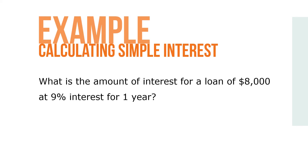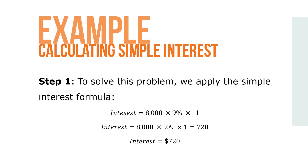Here's an example. What is the amount of interest on a loan for eight thousand dollars at nine percent interest for one year? To solve this problem, we apply the simple interest formula: Interest equals eight thousand times nine percent times one, or eight thousand times 0.09 times one, which equals seven hundred and twenty dollars of interest.